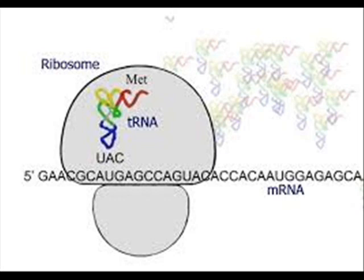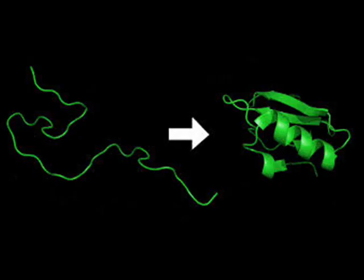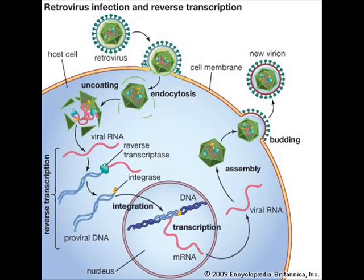Ribosomes then do the same thing, converting RNA into protein strings that fold themselves into automatic configurations based on charges and bonds. Until the 70s we believed that this was a one-way process. The discovery of reverse transcriptase changed that notion, which takes RNA and converts it into DNA.